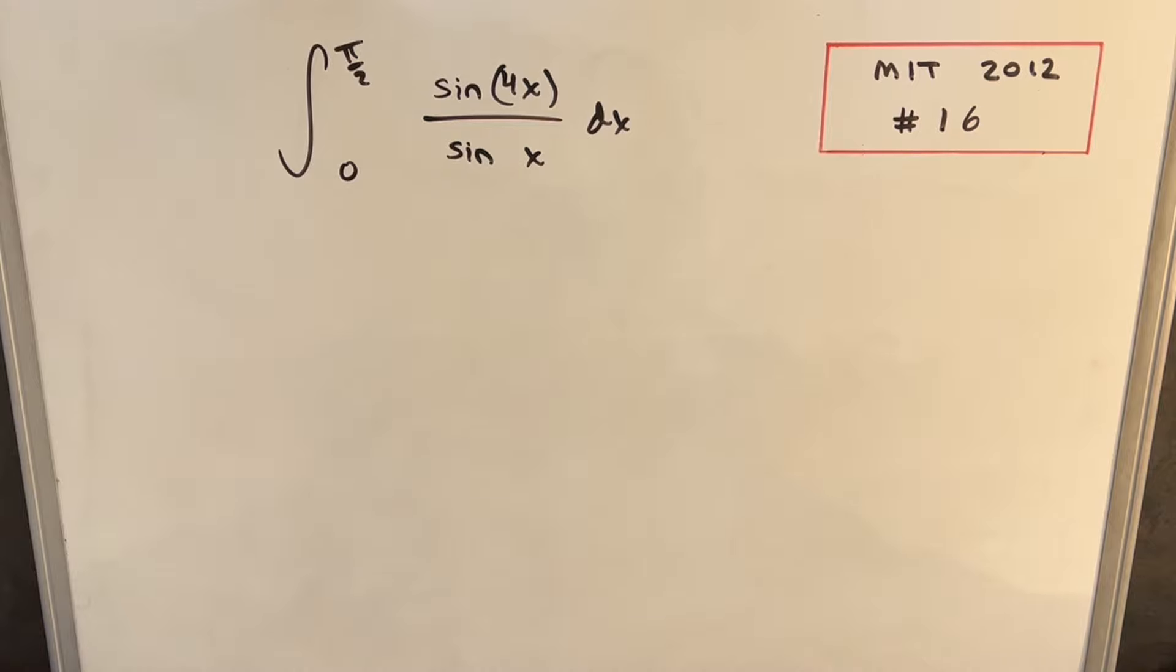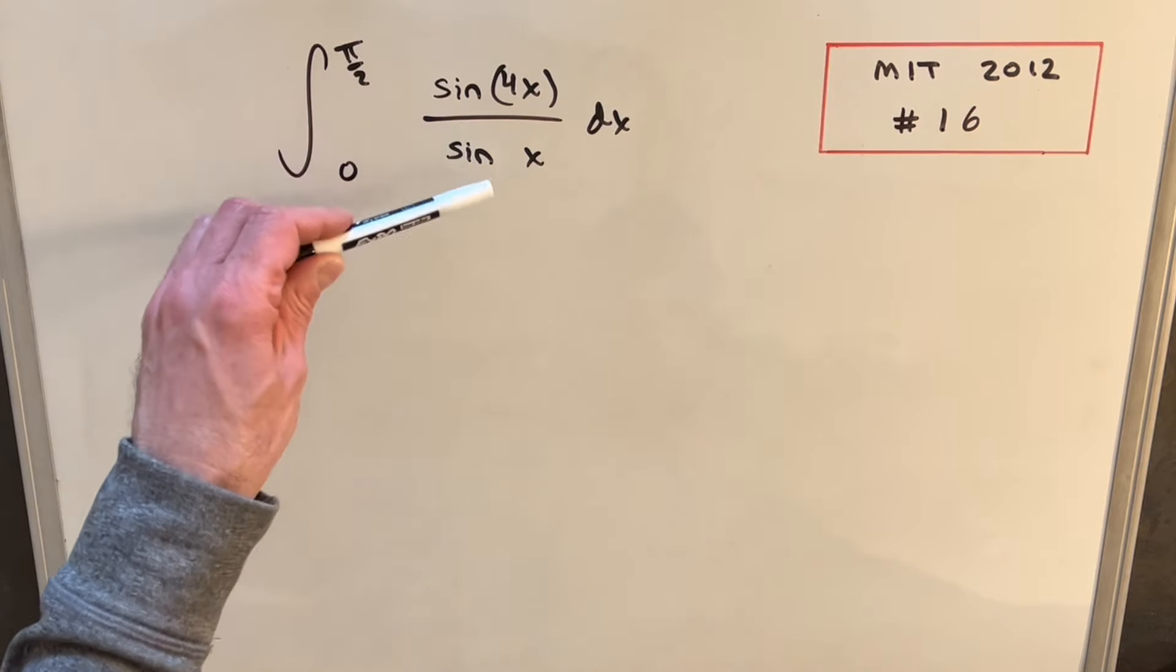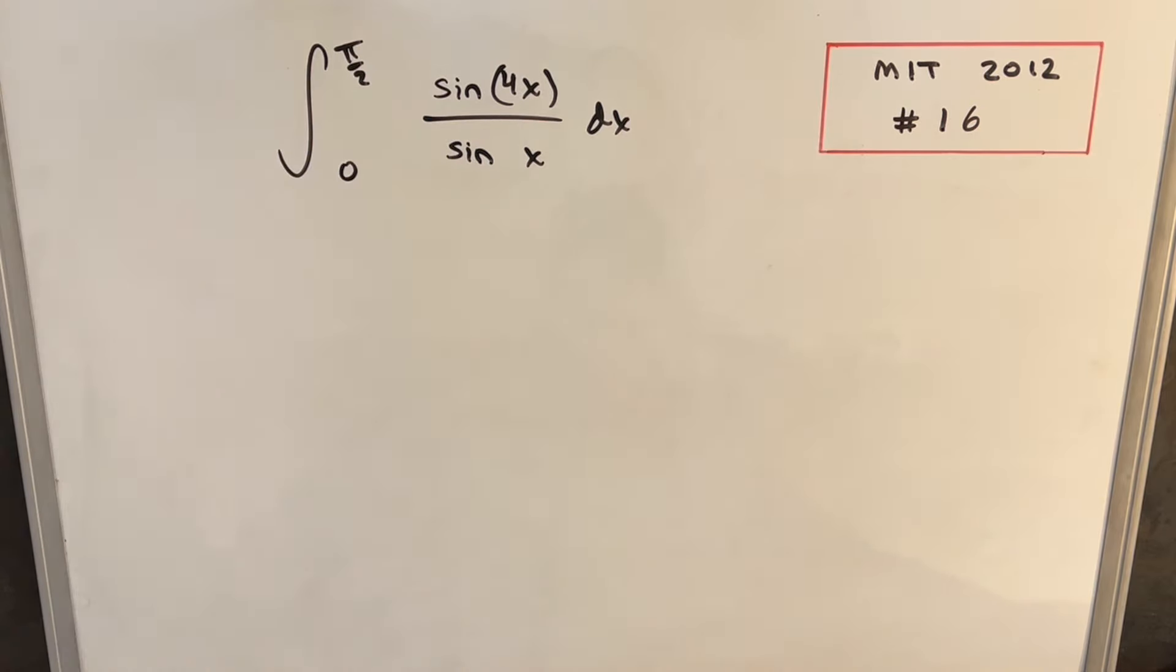And at first I was really tempted to just start canceling things. We could cancel sine with sine, x with x, and then we're just integrating 4. Fortunately, we can't quite do that, so let's look into something else.